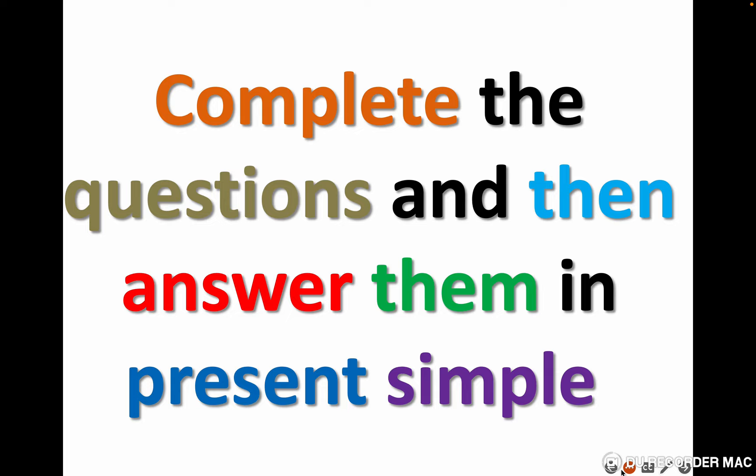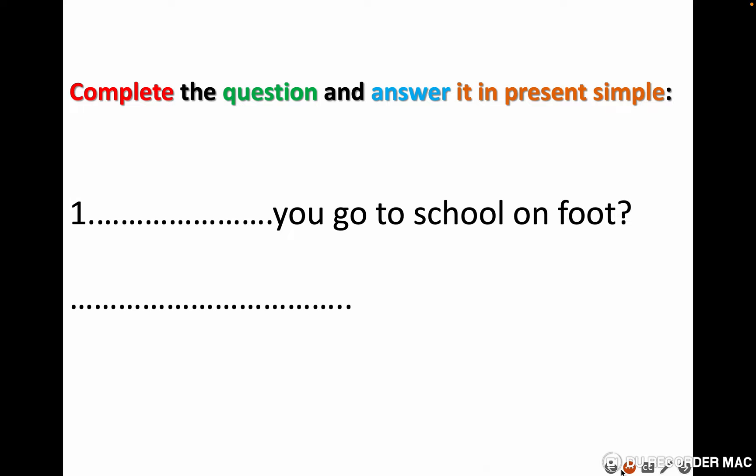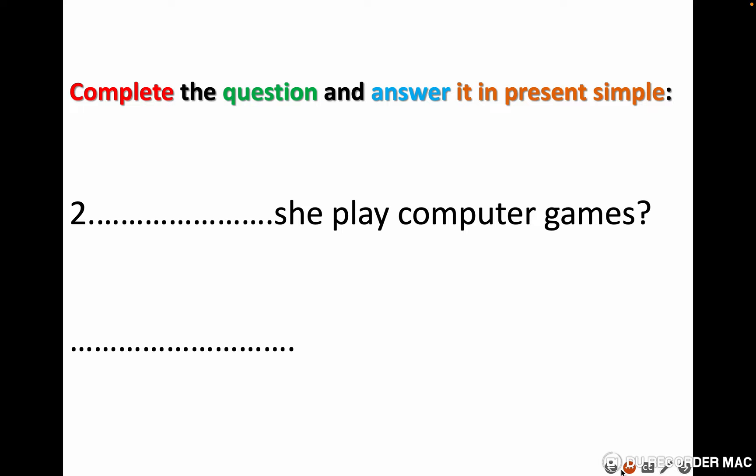Complete the questions and then answer them in the present simple. Number one: we have one missing word — 'you go to school on foot?' Write the word and then answer it. The answer should be a short answer, three words. Stop the video at every slide when you finish, then go to the next. Question two: complete the question and answer it in present simple.